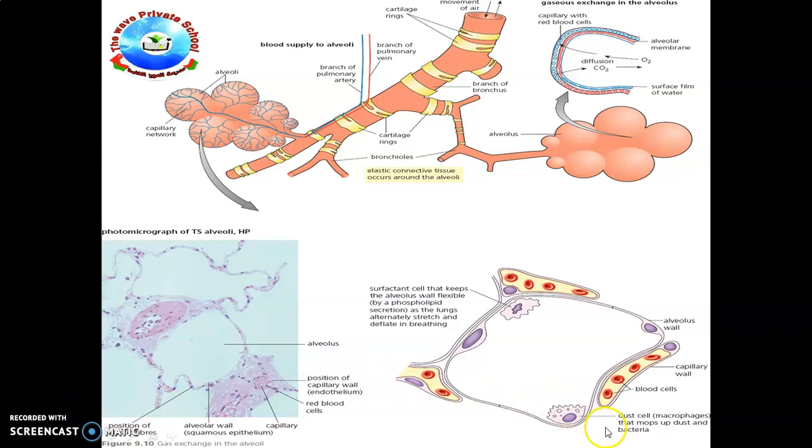You can see the dust cell present in the body that is coming into the surface wall of the alveolus and then it will be transferred into the capillaries, into the blood cells that are present in the capillaries. The next one is surfactant cells.